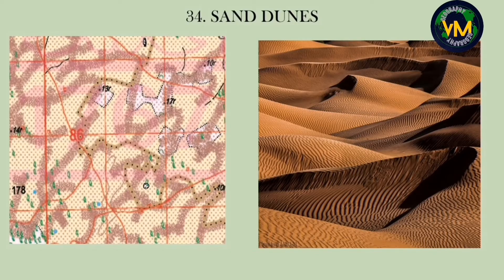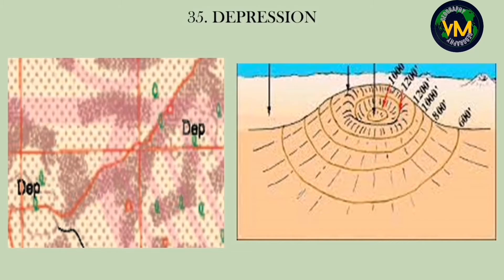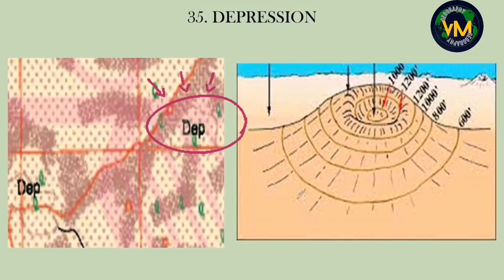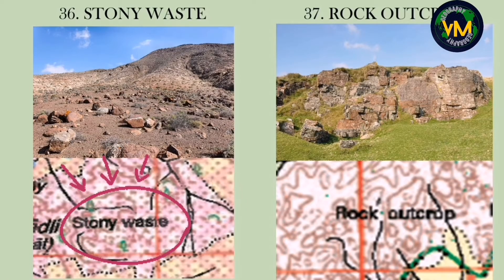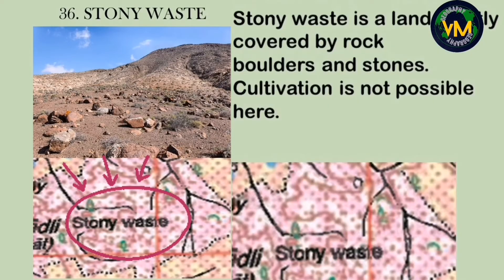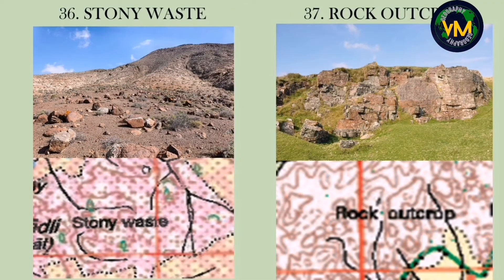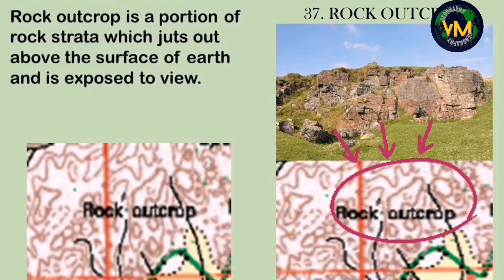Number thirty-four is sand dunes — hills of sand found in desert and semi-desert regions, represented by a cluster of brown dots. Number thirty-five, DEP, represents a depression — formed when the top of a sand dune is blown away by wind, leaving a hollow. Number thirty-six is stony waste — land covered by rock boulders where cultivation is not possible. Number thirty-seven is a rock outcrop — a portion of rock strata that juts out above the surface of the earth and is exposed to view.